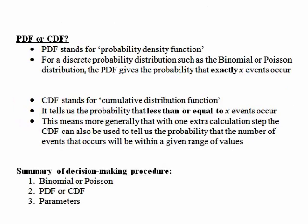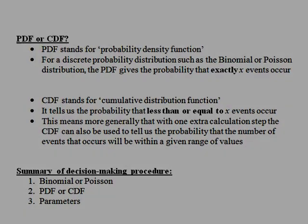In summary, the decision-making procedure for choosing the correct distribution and table type involves first deciding whether the distribution is binomial or Poisson, then determining whether it is a PDF or CDF problem, and writing down the parameters throughout the problem. With these pieces of information, you would then be in a position to calculate the required probability.